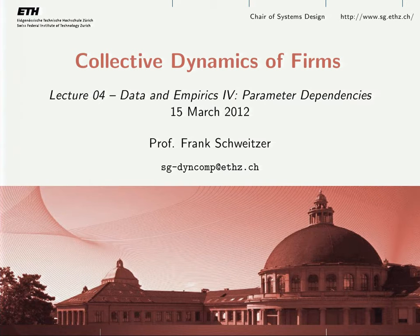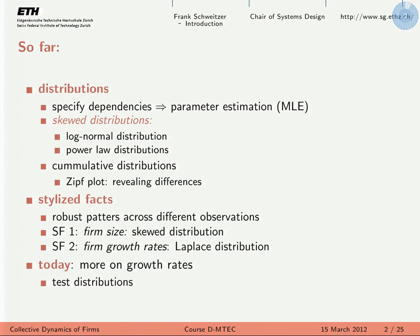So what did we do last week? We were talking about distributions and addressed the issue of how to specify parameter dependencies. Our assumption was that a distribution should be described by a mean value and a variance, and there was maximum likelihood estimation. You should understand the meaning of this. Then we talked about skewed distributions and the two best candidates: the log-normal and the power law.